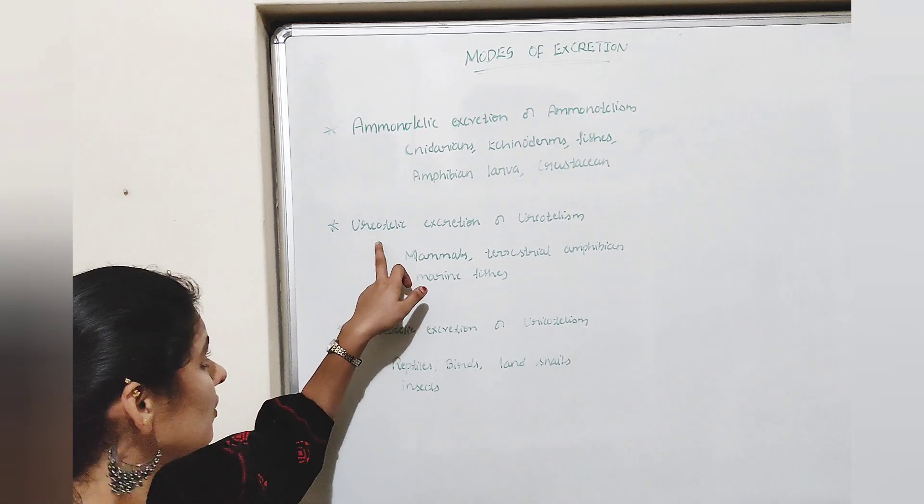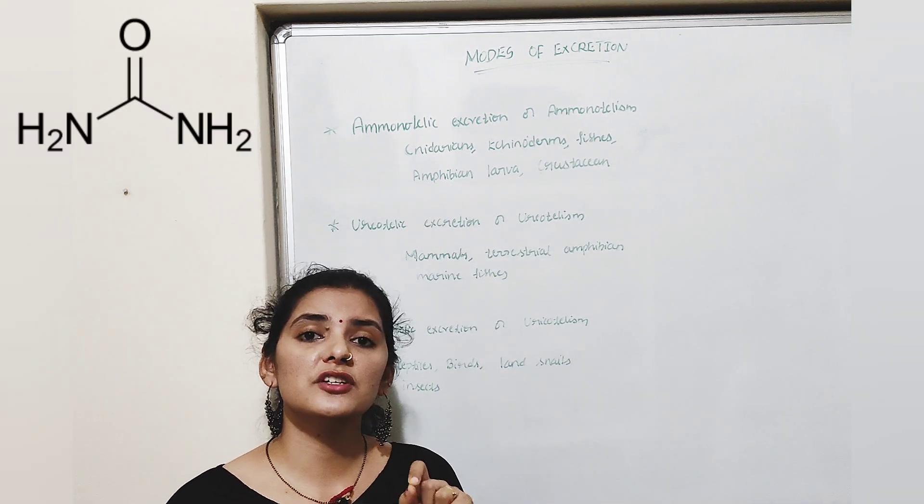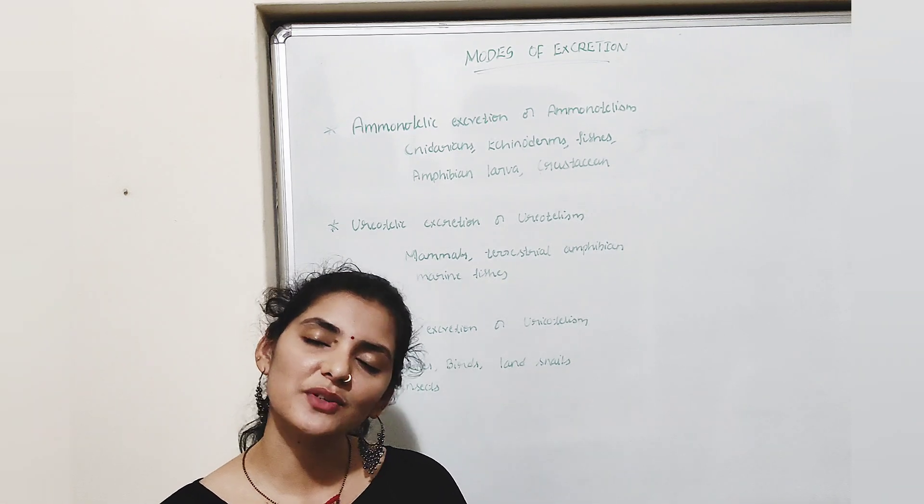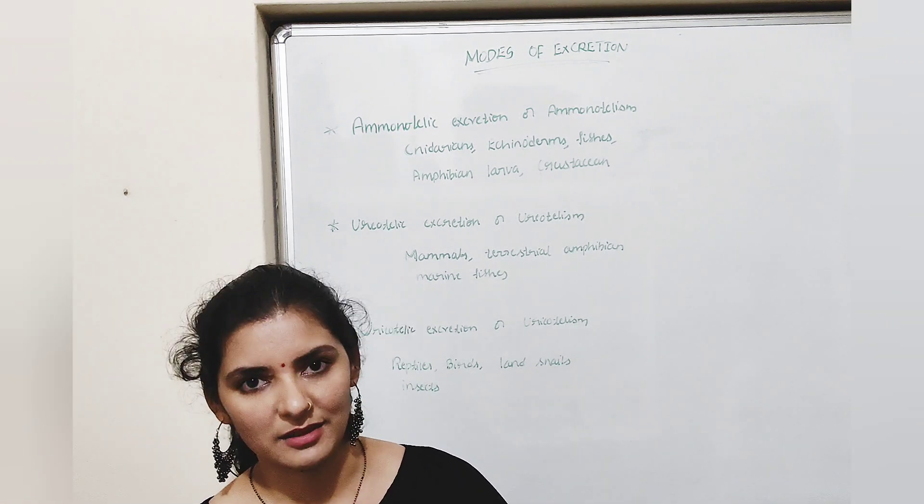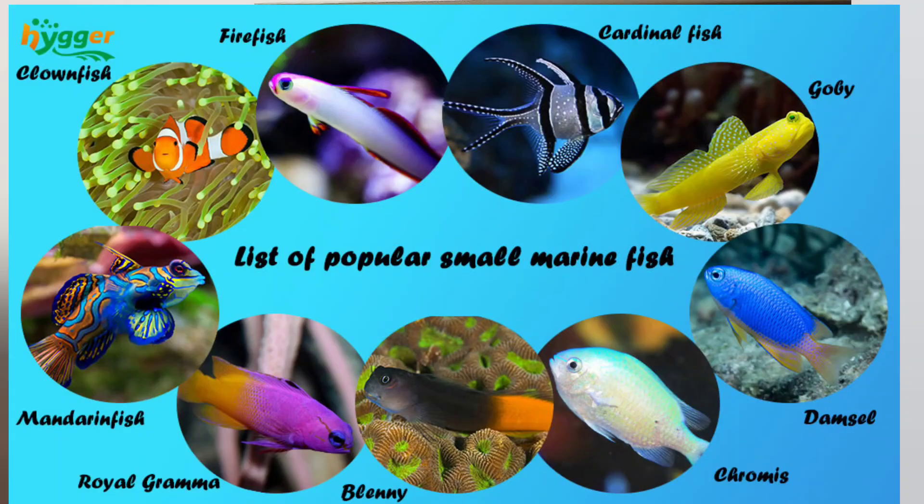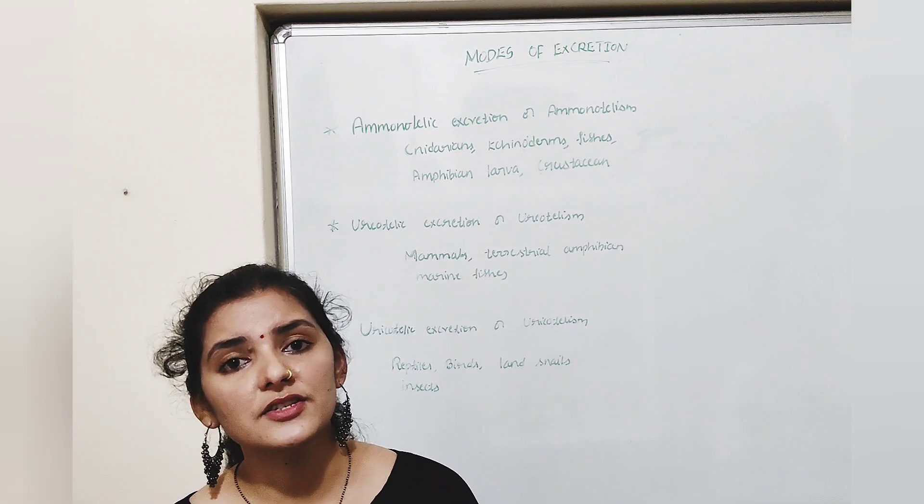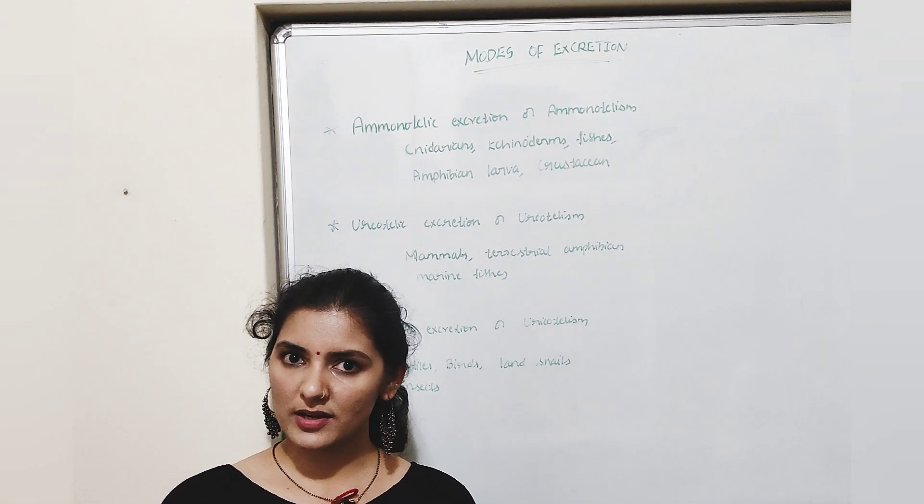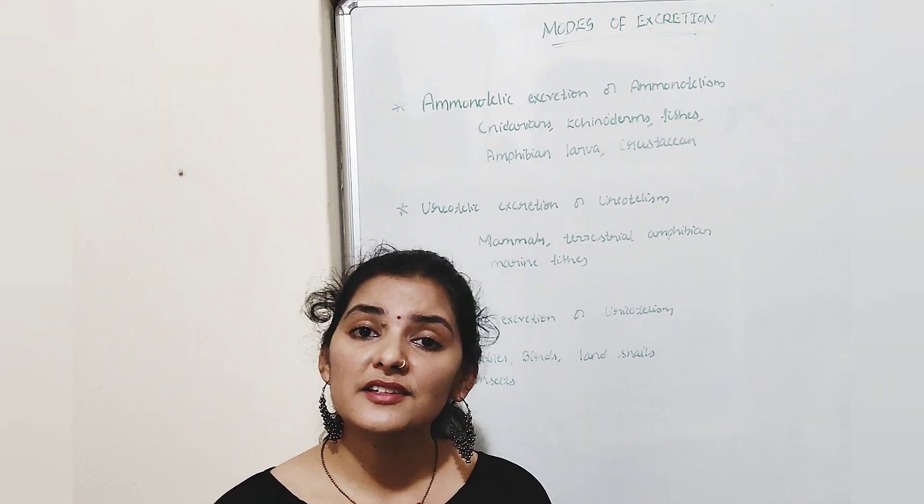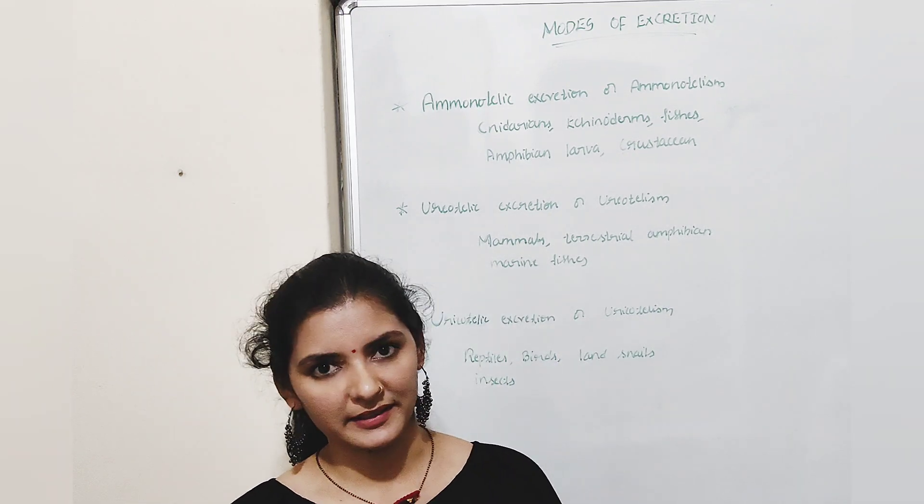The second type is ureotelic excretion or ureotelism. It is a process by which nitrogenous waste is released in the form of urea. Animals which excrete urea are called ureotelic animals. Examples include mammals, terrestrial amphibians, and marine fishes. In these animals, ammonia released as a result of metabolism is converted into urea in the liver. Later, this urea is released into the bloodstream, which is then filtered and excreted by the kidney.